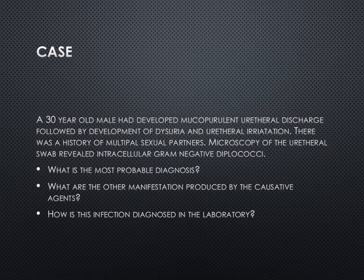First we will look at a case: a 30-year-old male had developed mucopurulent urethral discharge followed by dysuria and urethral irritation. There was a history of multiple sexual partners. Microscopy of the urethral swab revealed intracellular gram-negative diplococci. So it is a case of STD, as you can see from the history.